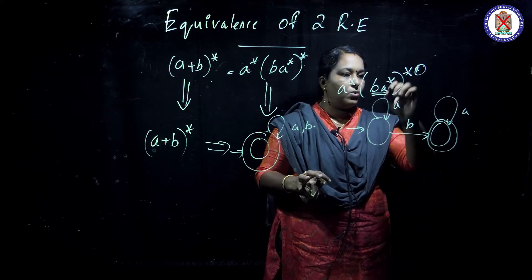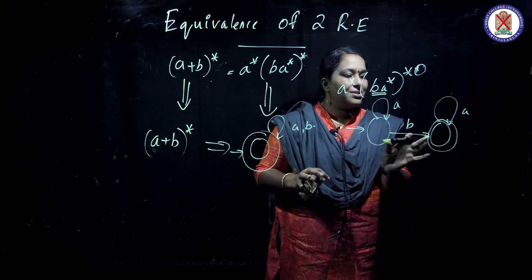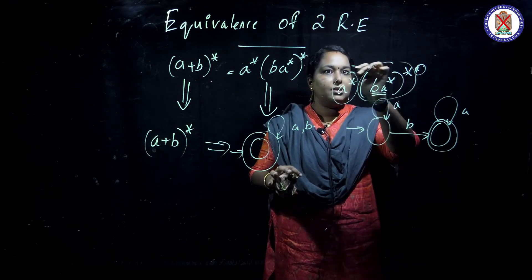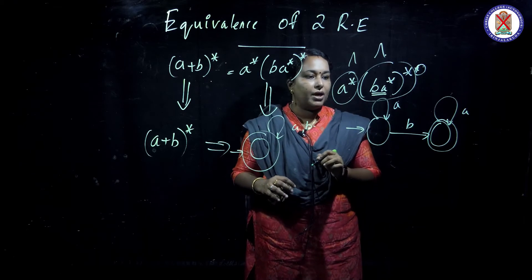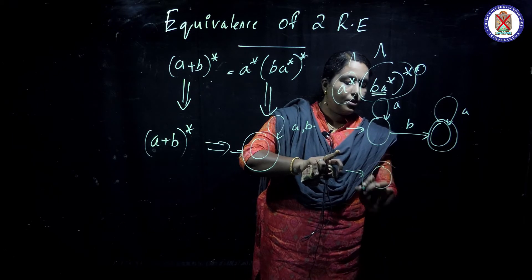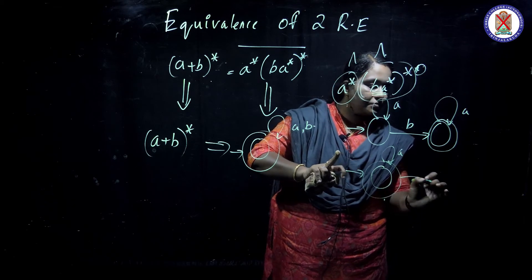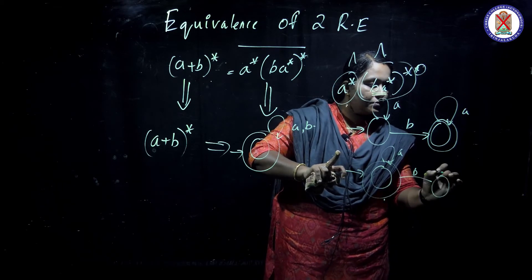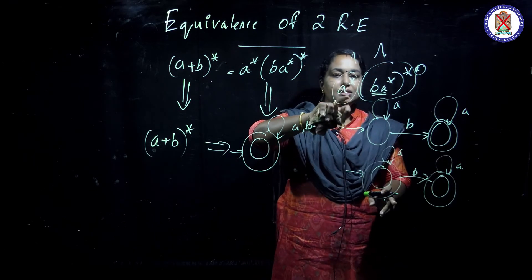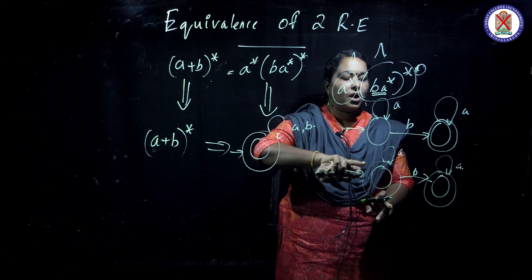Whole star means what? Whole star means this can either be looped — this can occur or this can occur. This both can be null, that is meant by this. So this can be reduced. A B A star. A star means this can be null also; this can be null means this can also be a final state.